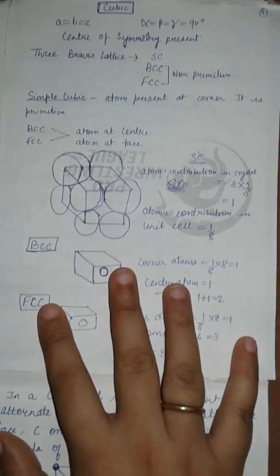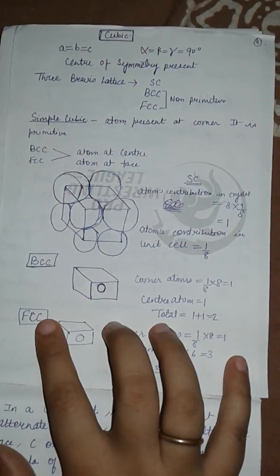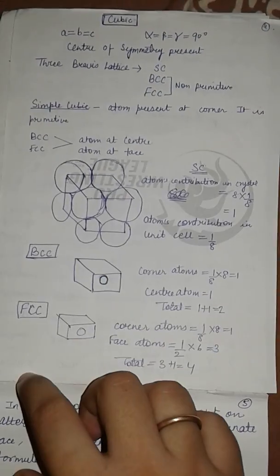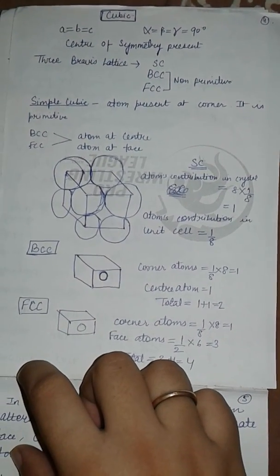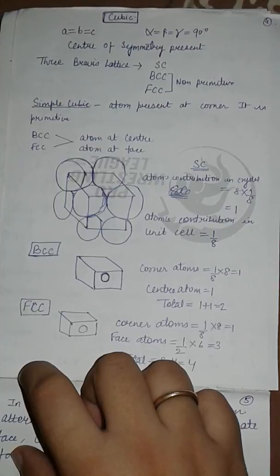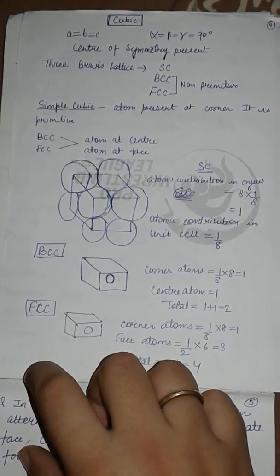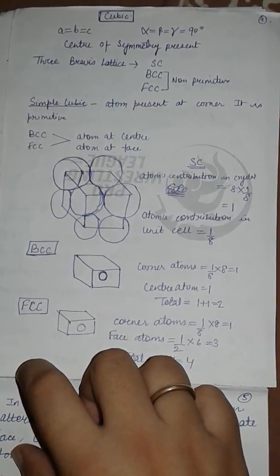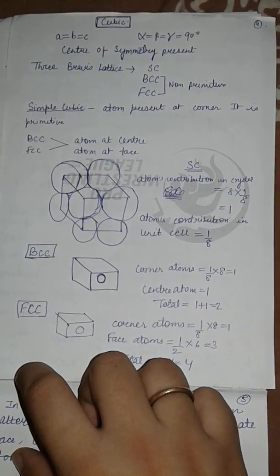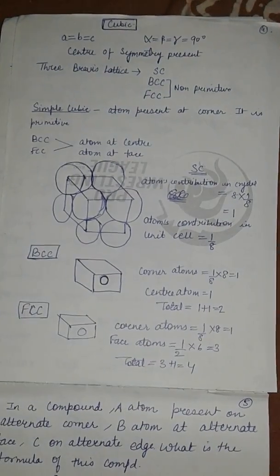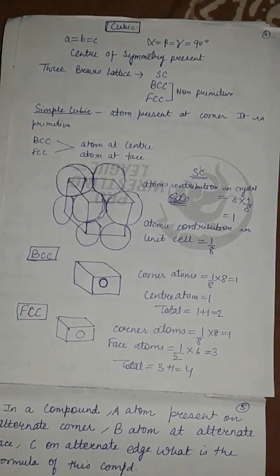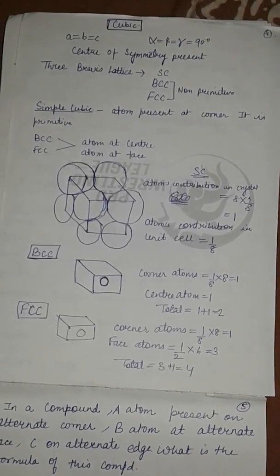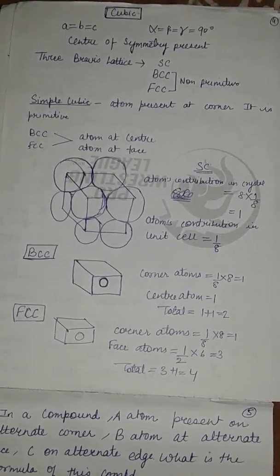For a cubic cell, a is equals to b is equals to c, and alpha is equals to beta is equals to gamma is equals to 90 degrees. The center of symmetry is present. There are three Bravais lattices: SC, BCC, and FCC. BCC and FCC are non-primitive, while simple cubic is a primitive cell.